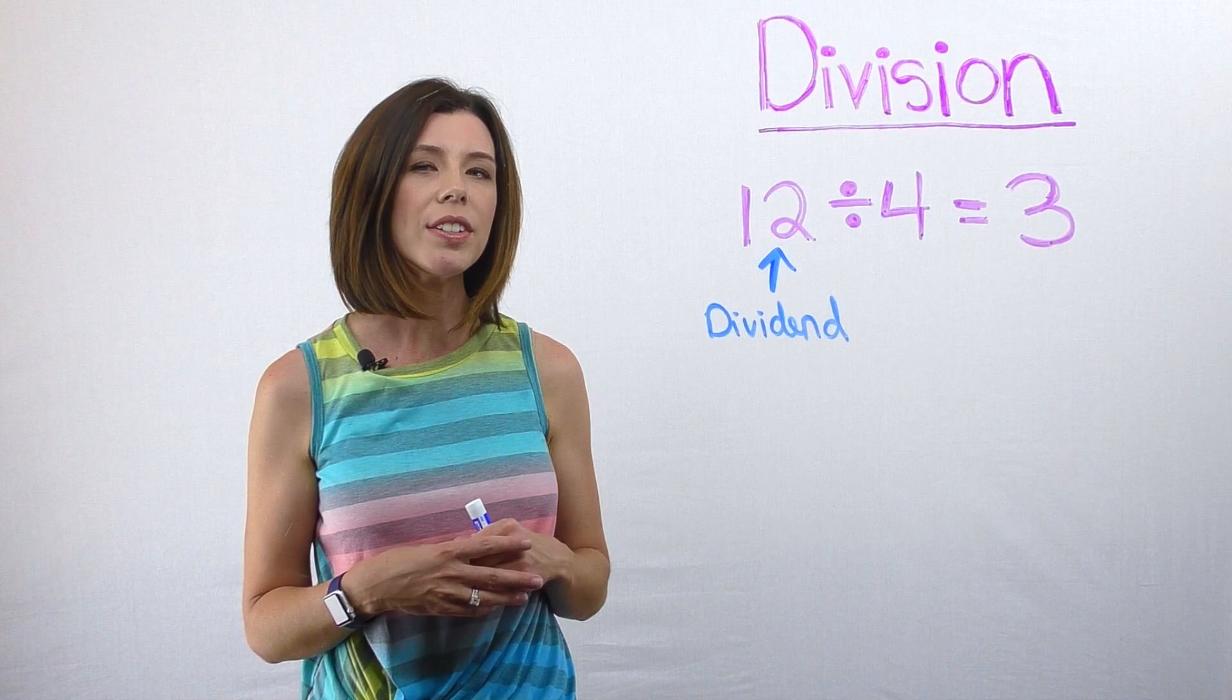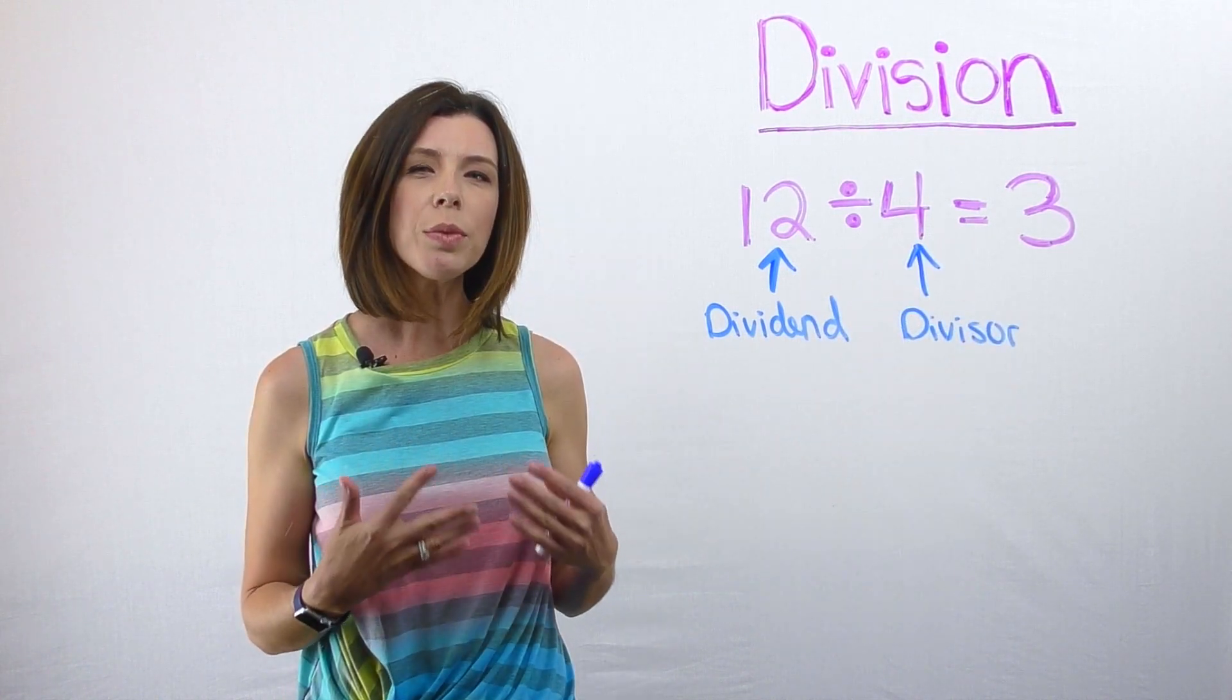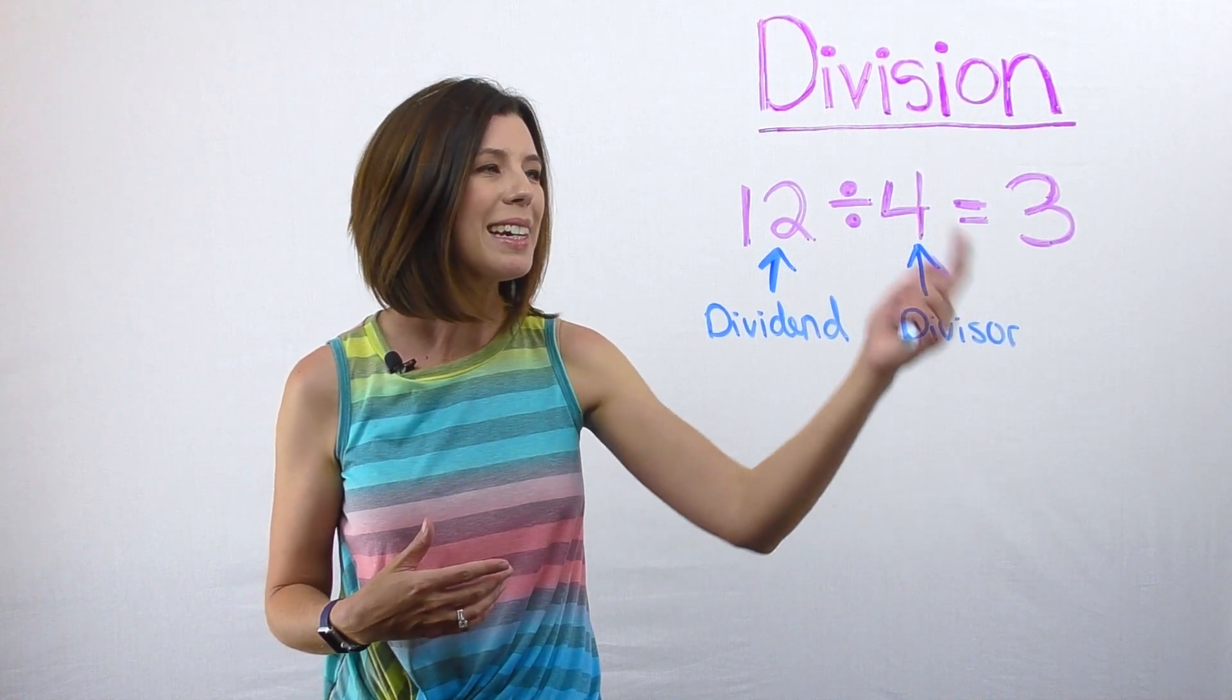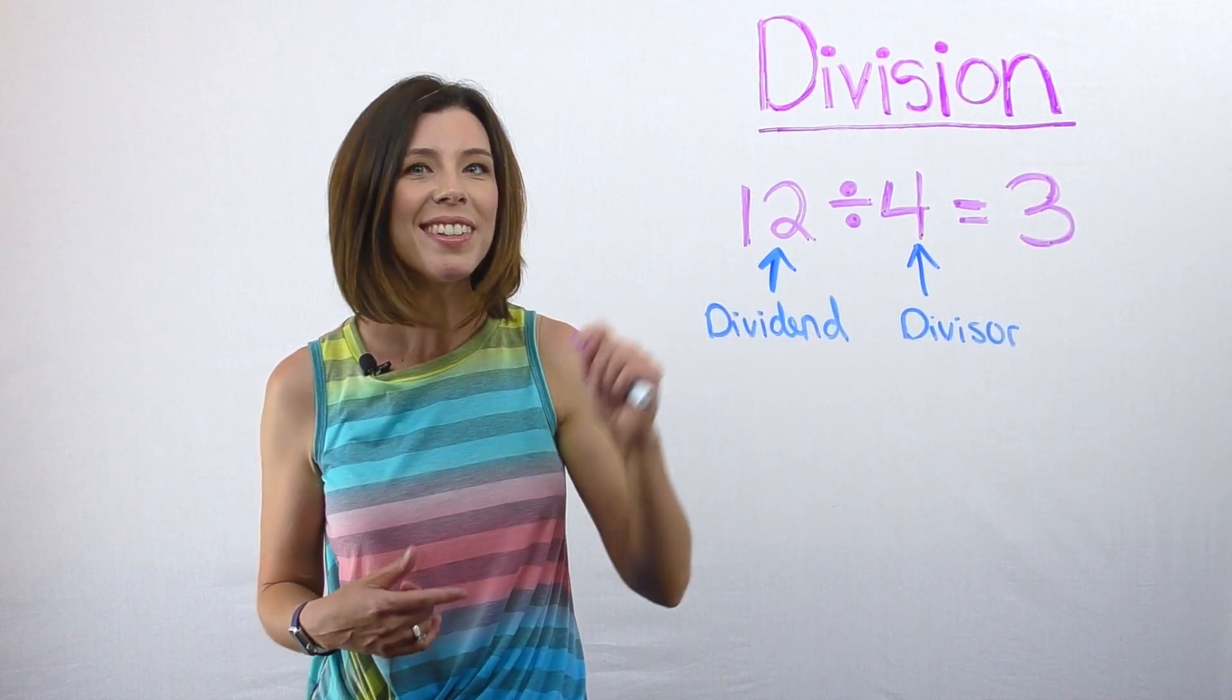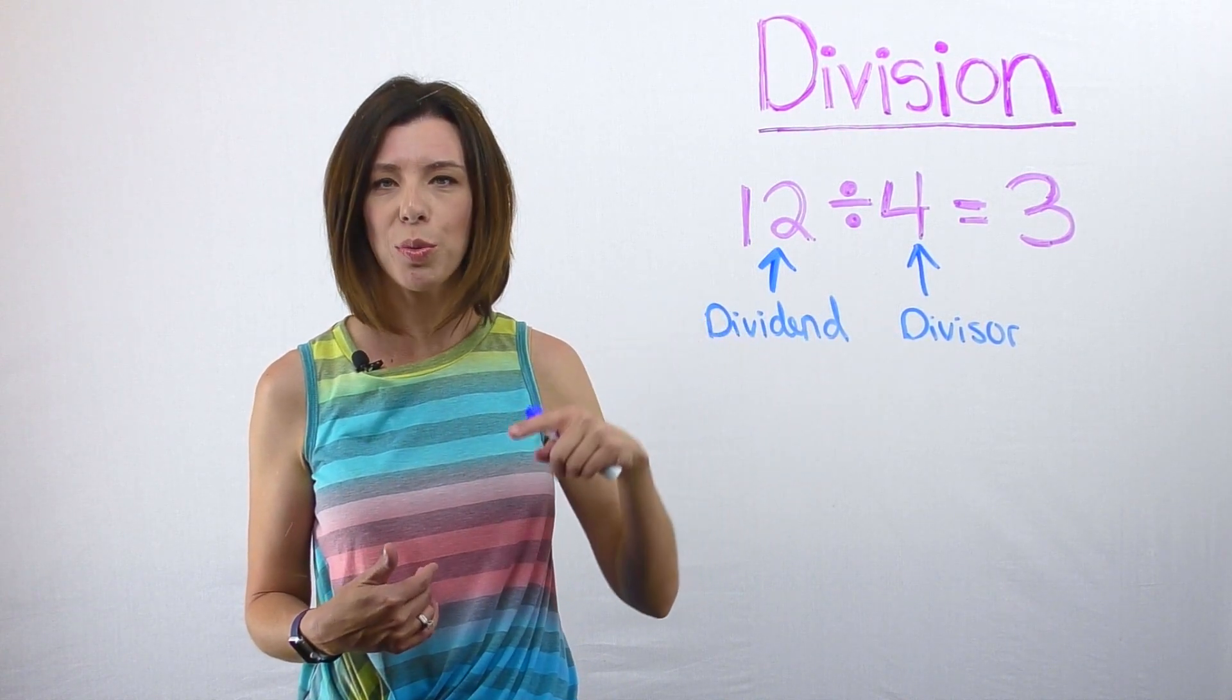The next piece of our division equation is going to be the divisor. For the divisor, we're literally saying how many copies of the divisor are in the dividend. In this case, how many fours or how many groups of four are in 12?